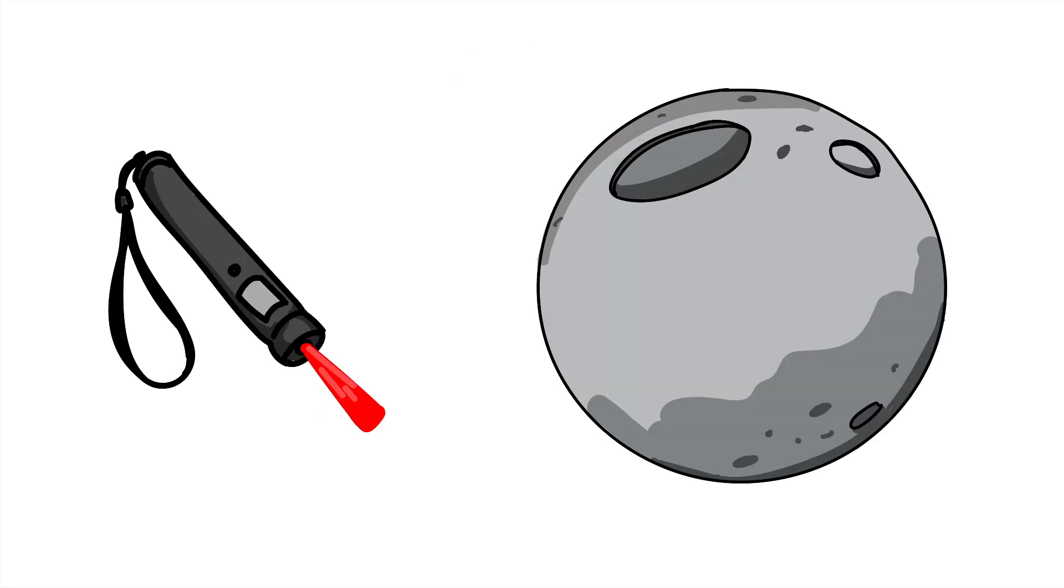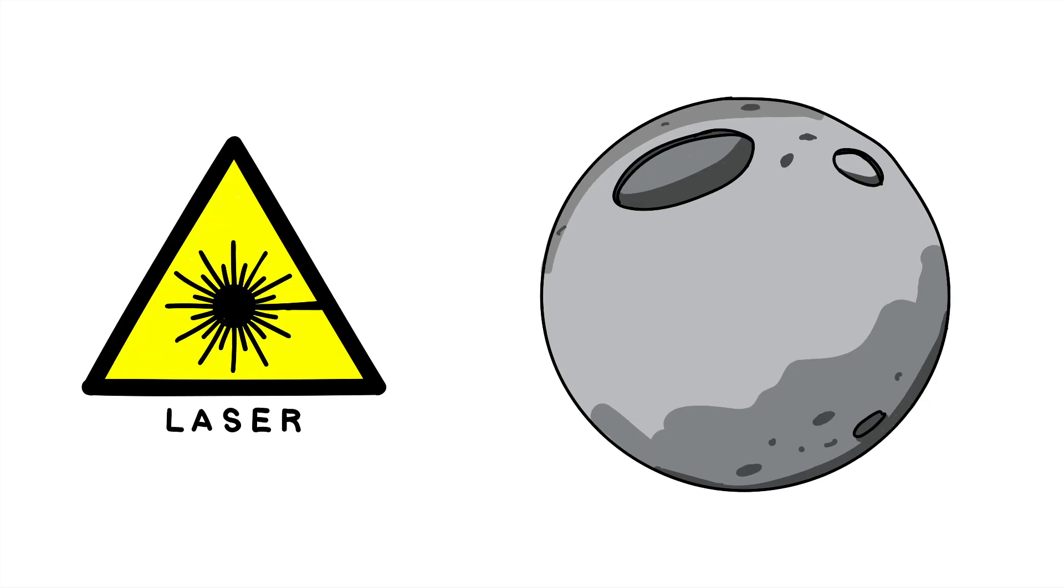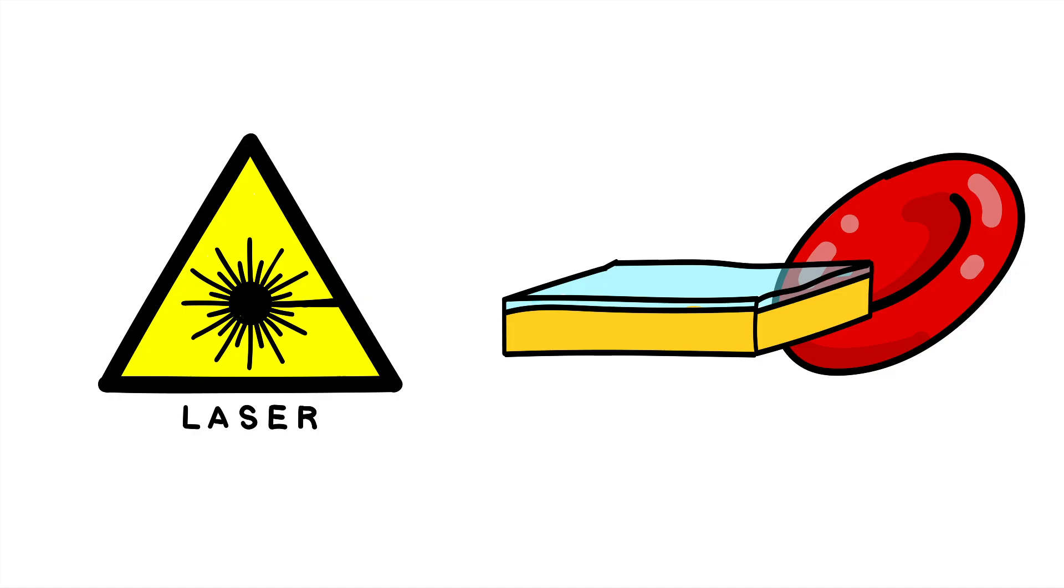So starting from the earlier thought experiment, we replaced the laser pointer with a high-powered pulsed laser, and instead of the moon we used a nanoscale sample thinner than a red blood cell. The top layer of the sample is made from a glass-like material called indium tin oxide, while the bottom layer is made from gold.